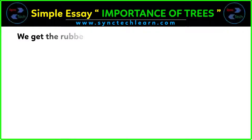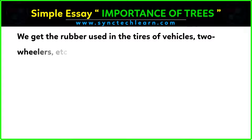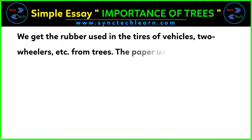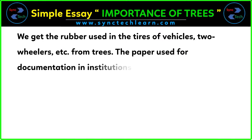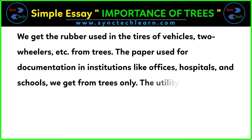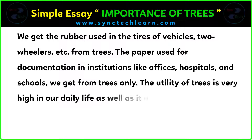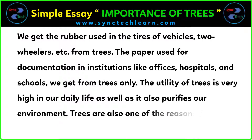We get the rubber used in tires of vehicles, two-wheelers, etc. from trees. The paper used for documentation in institutions like offices, hospitals, and schools we also get from trees. The utility of trees is very high in our daily life, and it also purifies our environment. Trees are also one of the reasons for rain on the earth.